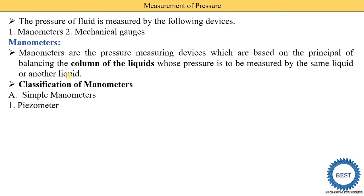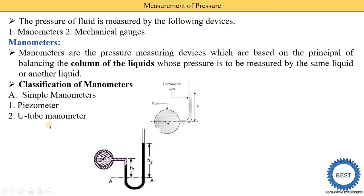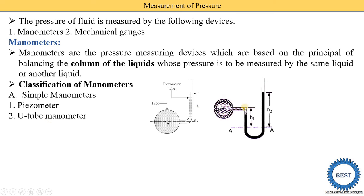In simple manometers there are four types. The first is the piezometer — the liquid level rises in the tube to a certain height called the pressure head, and using the equation ρgh we can find the pressure. The second type is the U-tube manometer, where a U-shaped tube is used.